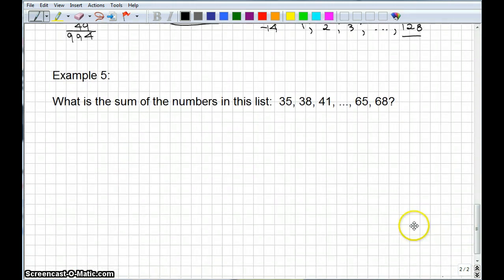All right, we have another list of numbers. Here we have a list, 35, 38, 41, all the way up to 68, and we're asked to find the sum of these numbers. All right, so let's look at the difference between the numbers. Make sure it's arithmetic first. So here we have, we're adding 3. Here we add 3. So the difference between consecutive numbers is 3. So it's arithmetic.